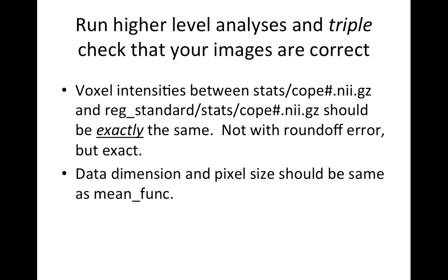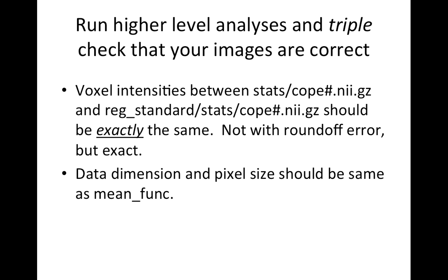Run your higher level analyses as you normally would, then triple-check that your images are correct. Compare the voxel intensities between the cope in the stats directory of your level one FEAT and the cope in the reg_standard/stats directory — these two copes should be exactly the same, not just within rounding error, but exactly the same. You want to make sure no extra smoothing was applied. Also check using fslinfo or fslhd that your data dimensions and pixel sizes are the same as the mean_func.